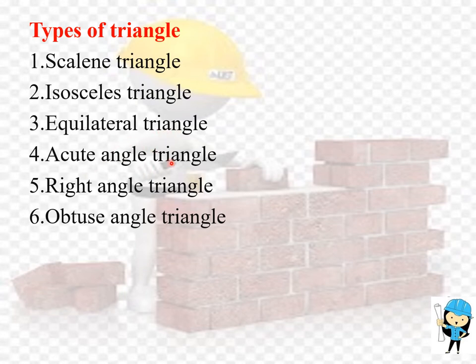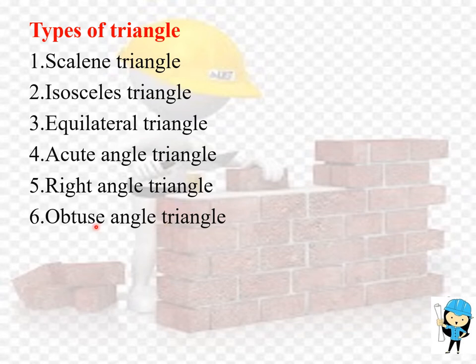In an acute angle triangle, all 3 angles are less than 90 degrees. In a right angle triangle, one angle is 90 degrees and the sum of the other 2 angles is equal to 90 degrees. In an obtuse angle triangle, one angle is greater than 90 degrees and the remaining two angles are less than 90 degrees.